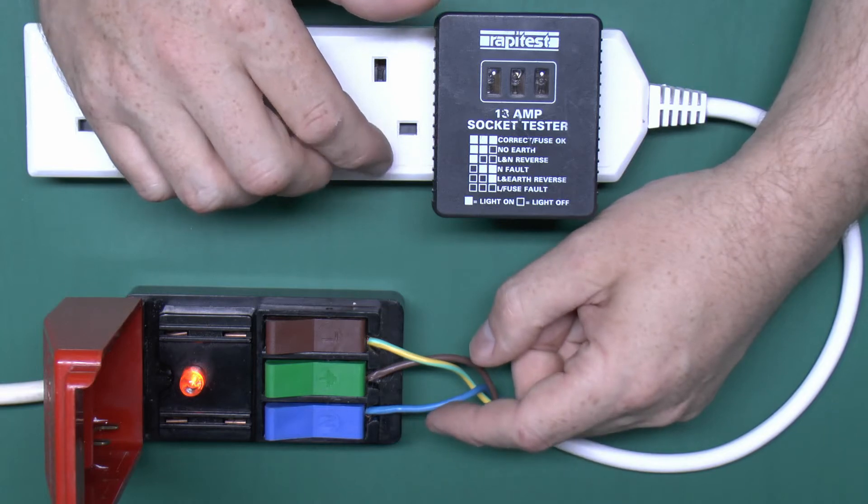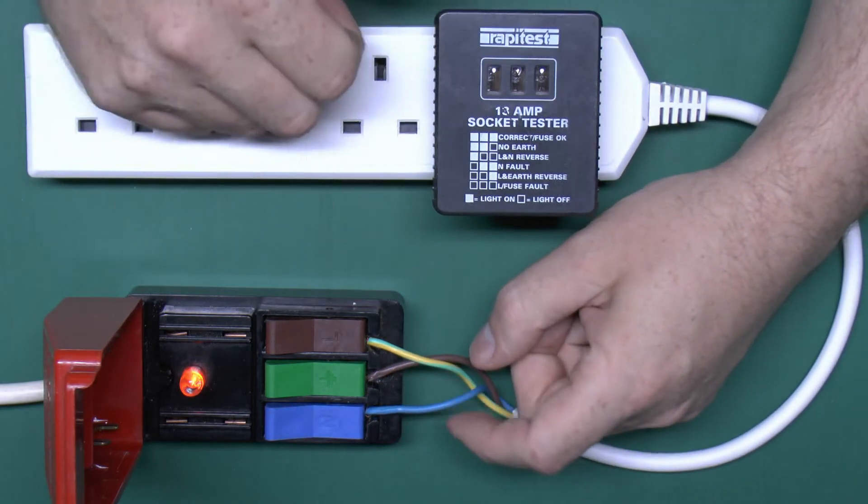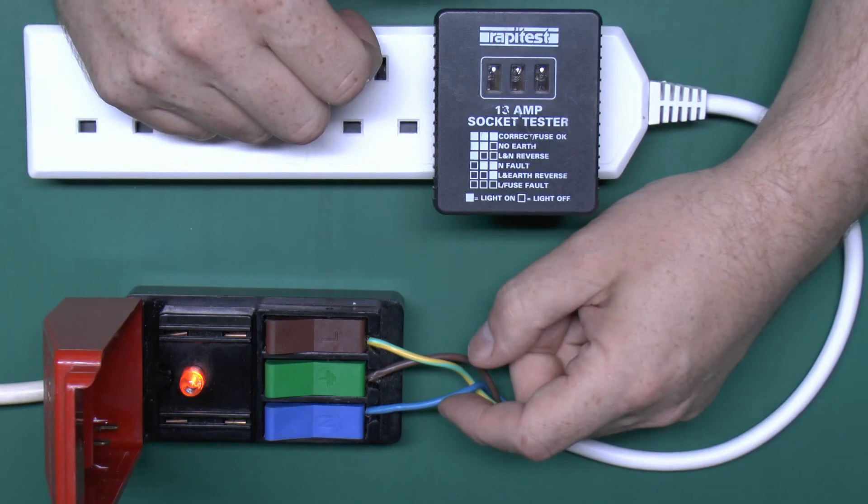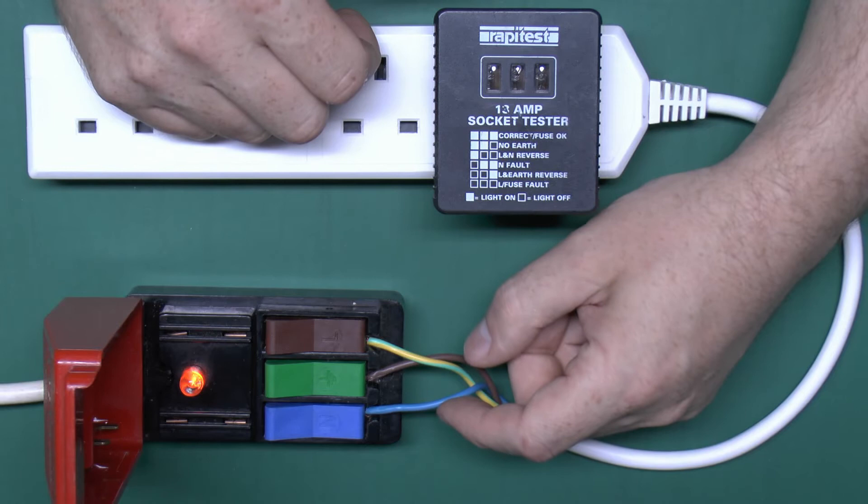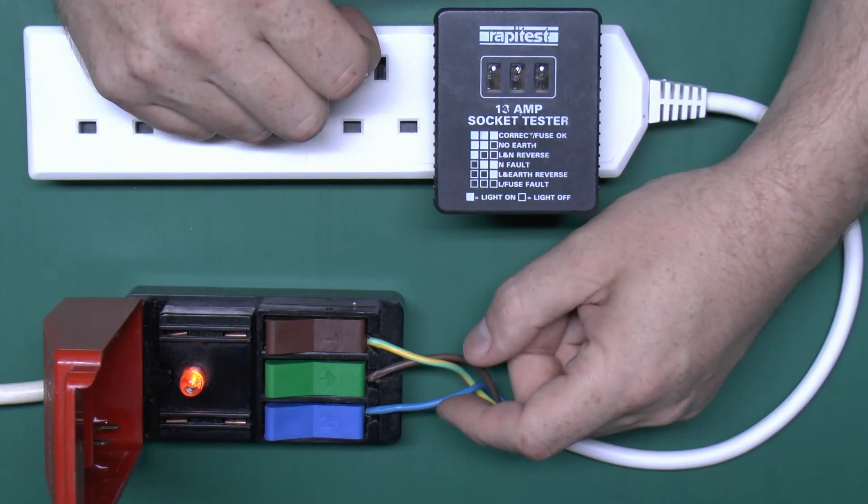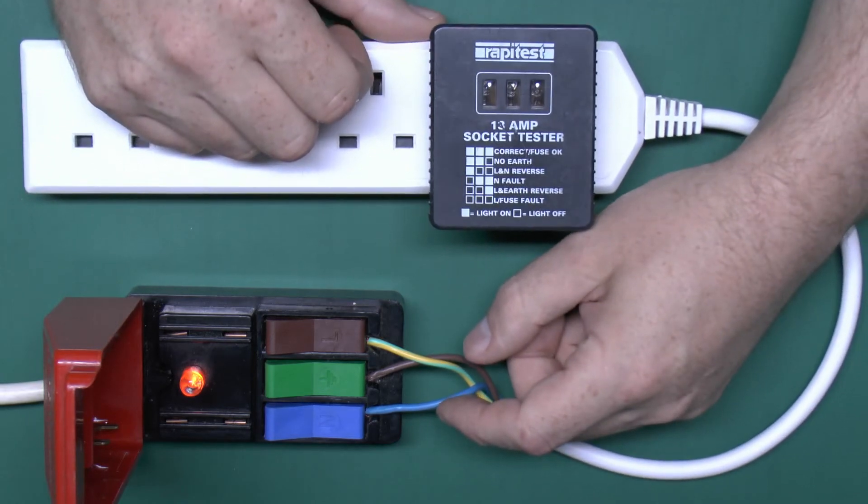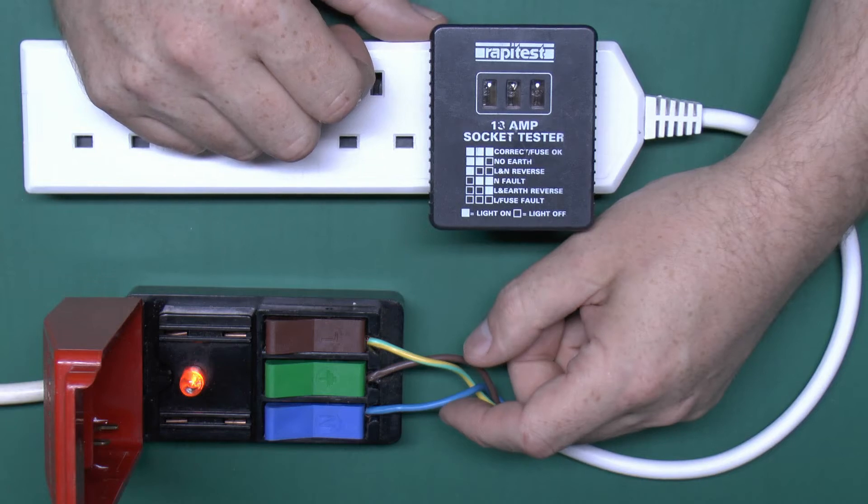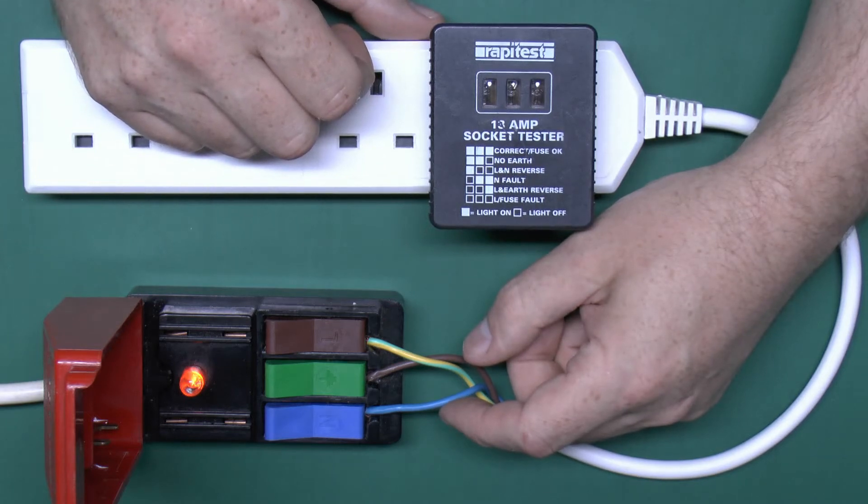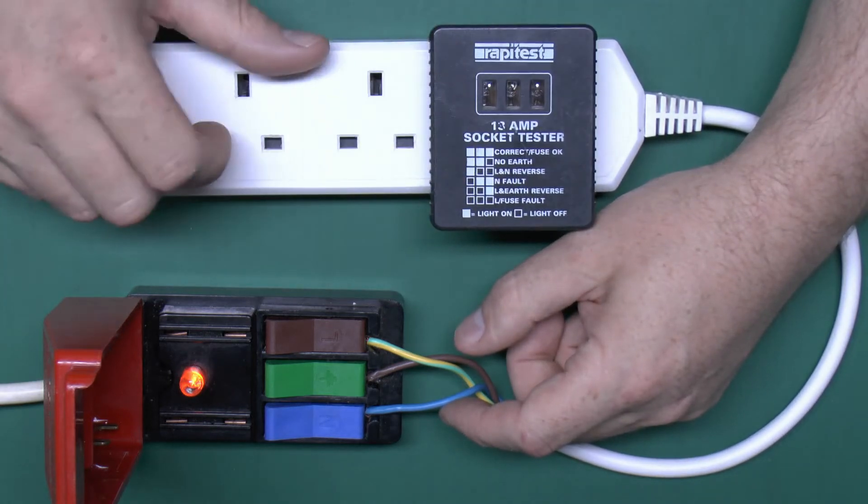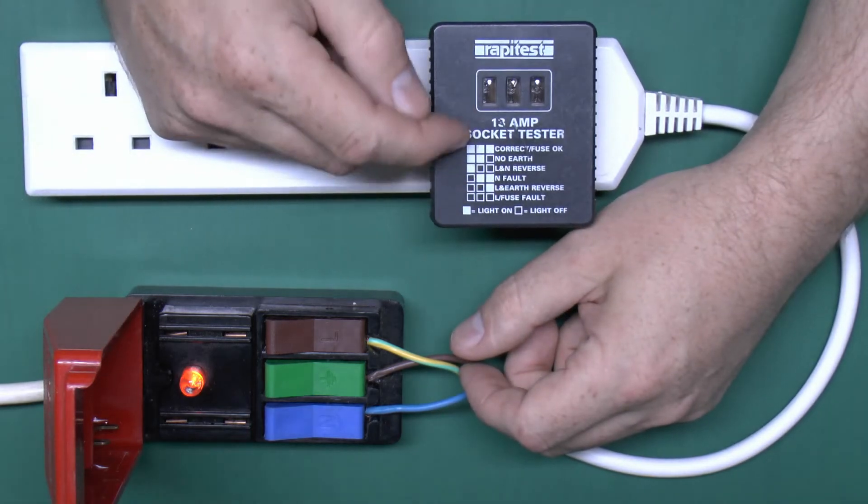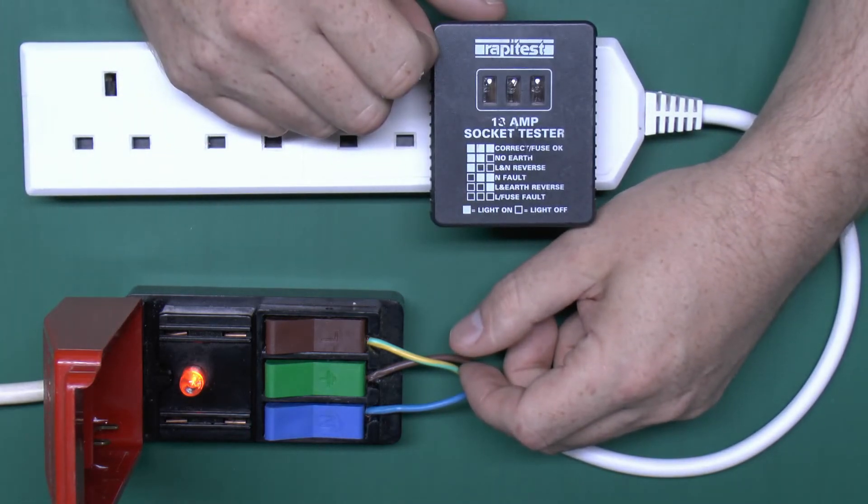It's also possible that two of the pins, or maybe even all three could become connected to the same terminal. So you might have two of them connected to live for example, or two connected to earth or whatever else. So with that in mind, you've got four combinations and three pins to connect to, so the total number of combinations is actually 64, and here we've got six, so a very small amount involved.